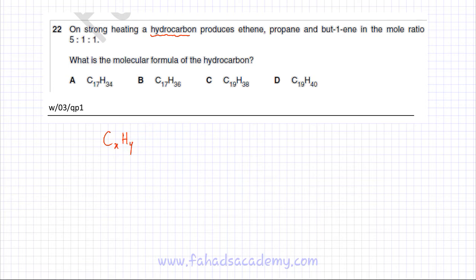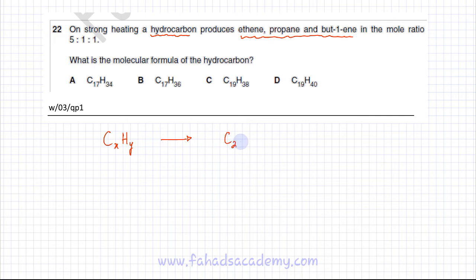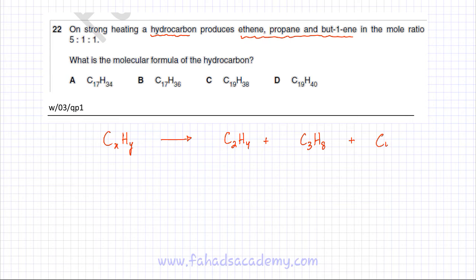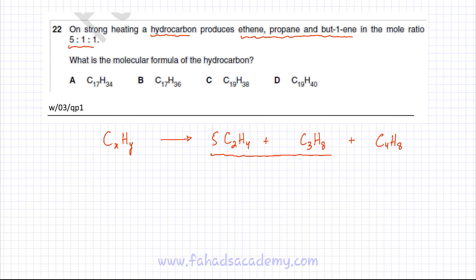X and Y are unknown — we don't know how many carbons and hydrogens there are. Remember, when cracking happens the molecule breaks down into smaller pieces. Ethene is C2H4, propane is C3H8, and butene is C4H8. They are produced in the ratio 5:1:1, so for every 5 ethene, 1 propane and 1 butene are produced.